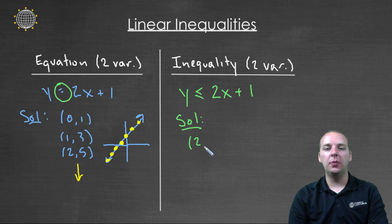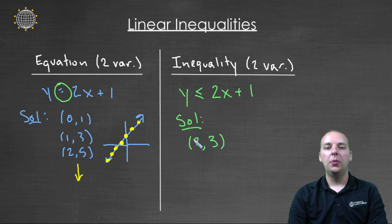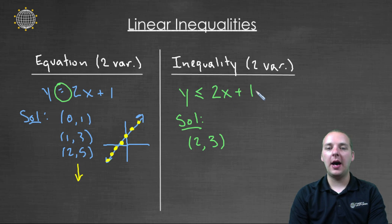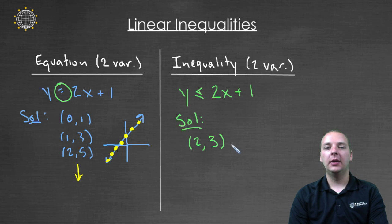Let me jot down a few ordered pairs. Here's my question: is the point (2, 3) a solution? Let's try it — when we plug in two for x and three for y, does it make the inequality true? Two times two is four, and four plus one makes five. Three is less than five, so yes, this would be a solution.